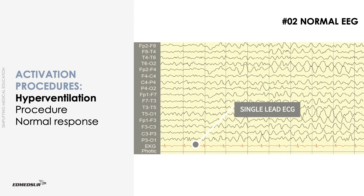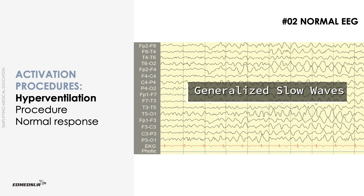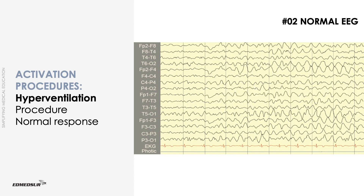Mild tachycardia is considered normal, but hyperventilation should be stopped if the patient develops chest pain, ST changes, or other rhythm disturbances on the ECG. Normal response consists of generalized slow waves that may begin soon after the onset of hyperventilation, and it ends within 1 minute after the patient stops hyperventilating.